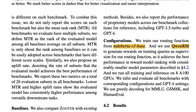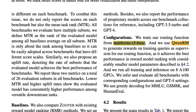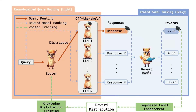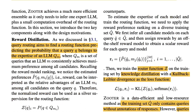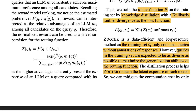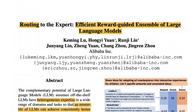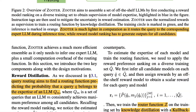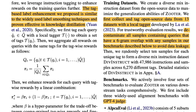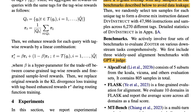ZOOTER is not without issues, but it shows potential for growth. The router model is a DeBERTa v3 base that is trained using Queen RM as the reward model. ZOOTER is a data-efficient and low-resource method — the training set only contains queries without annotations of responses, but the queries are expected to be diverse. They took open datasets, created tags from them, generated diverse instruction data, trained the router model, used GPT-4 as judge, and evaluated everything.